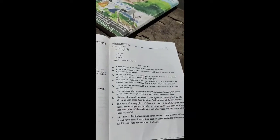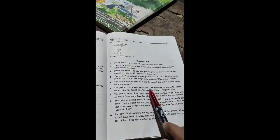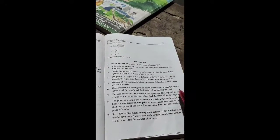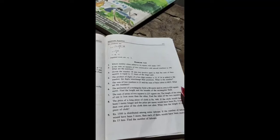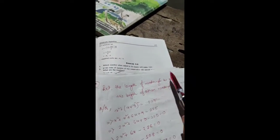So suppose the length of one square is x. The other square is three centimeters more, so x plus three. Sorry, it should be square, not rectangle.